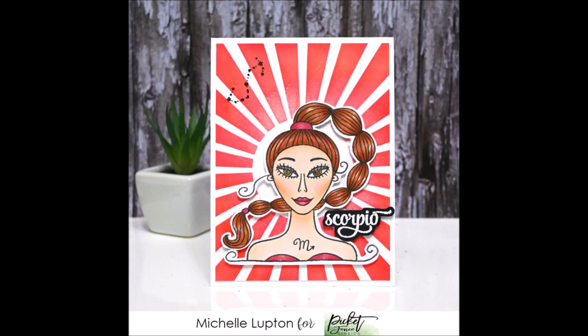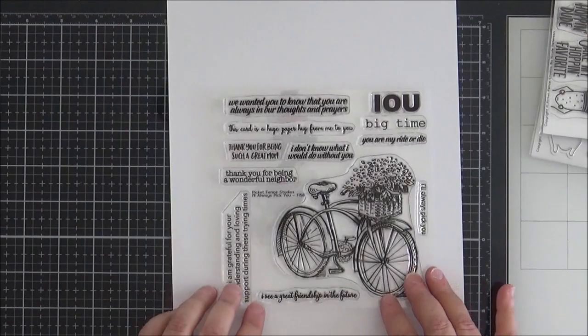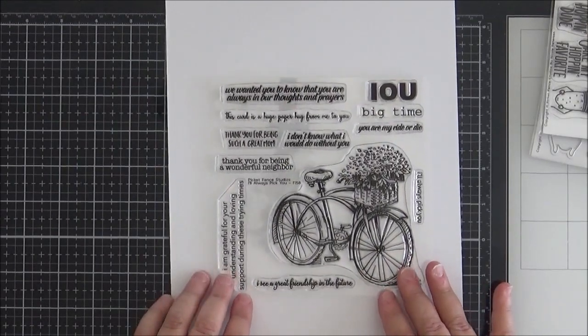Here's a card from Michelle where she uses the Scorpio Girl, and she's created a stenciled background that I really think makes that image pop. I love the colors that she's used in this bright, vibrant card. And last up, but certainly not least, you've got this gorgeous set here called I'll Always Pick You.